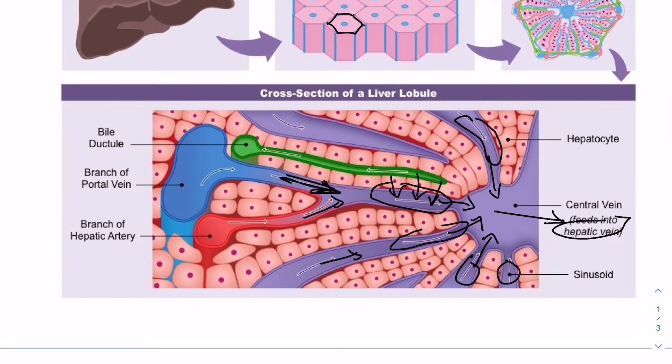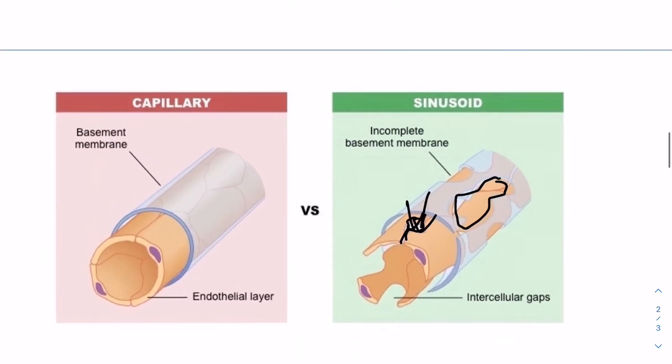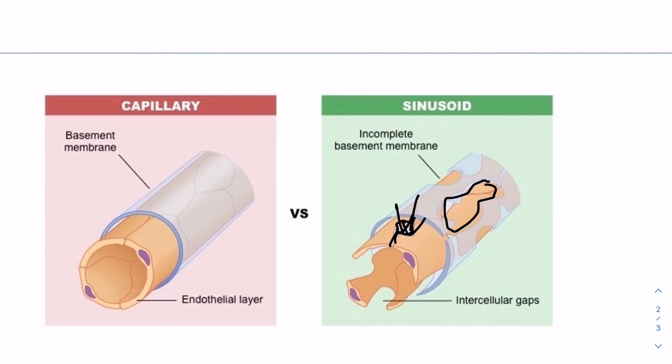So I've been talking about sinusoids, but what exactly are they in more detail? So, sinusoids are a type of small blood vessel found in the liver that have a similar structure and function to capillaries.